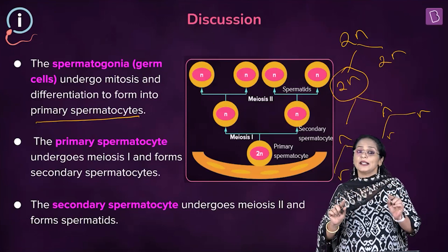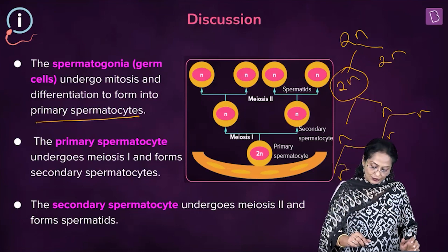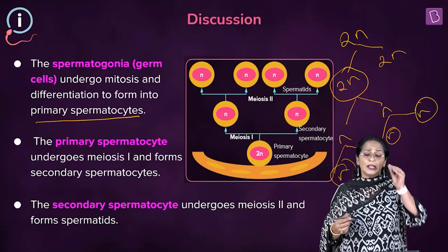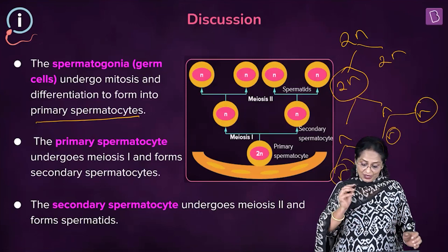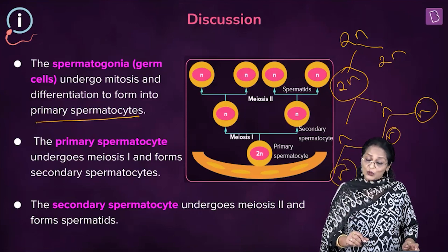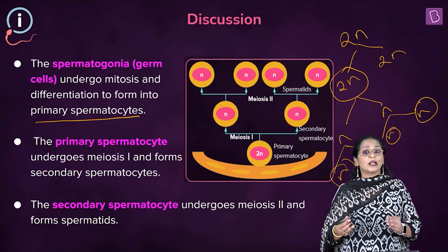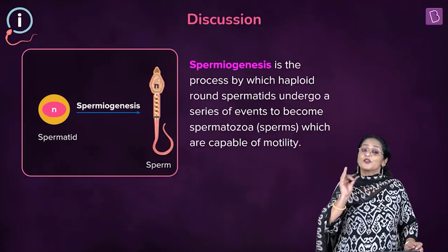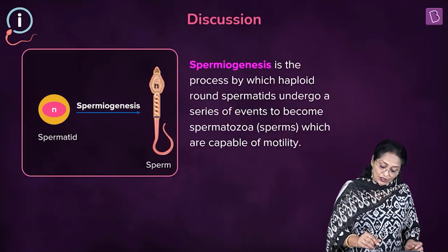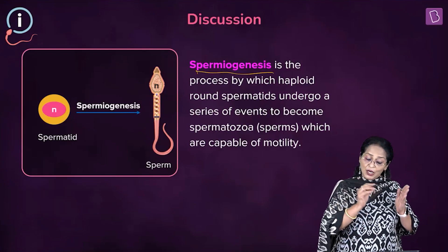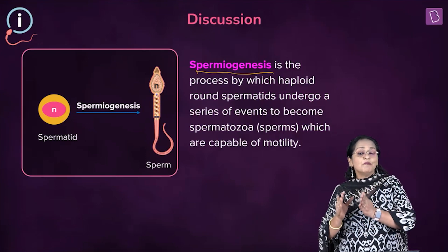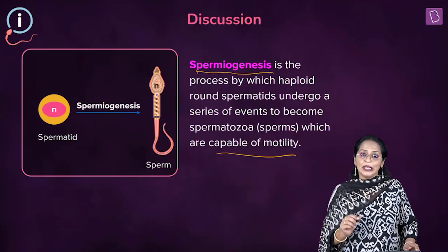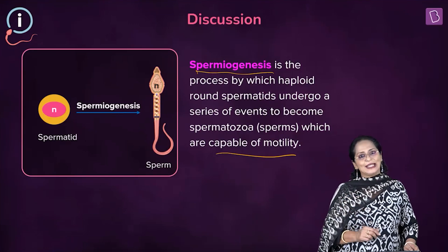Each secondary spermatocyte gives rise to two spermatids, so totally four spermatids are formed. These don't have a tail and are not capable of swimming. These spermatids transform by the process called spermiogenesis from a non-motile form to a motile form — sperms which are capable of swimming. A round cell has now become an elongated cell which has a tail.